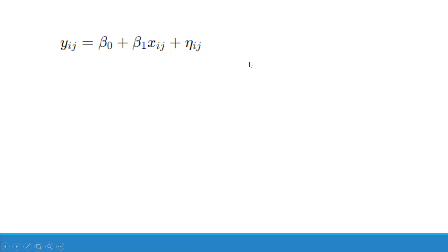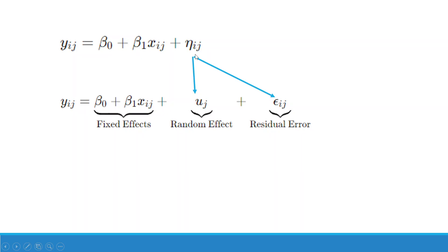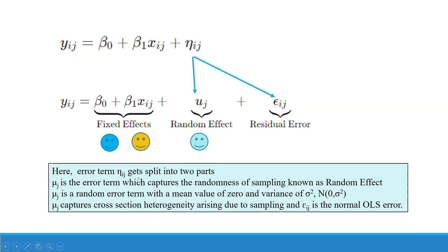This is the original OLS equation. The error term gets split into two parts — eta gets divided into mu and epsilon. The first part captures the fixed effects and the second part captures the random effects. Teaching method A and B represent the fixed effects. The error term eta_ij splits into mu_j, which captures the randomness of sampling, known as a random effect, and E_ij, which is the normal OLS error. Mu_j is a random error term with mean value of zero and variance sigma squared, capturing cross-section heterogeneity arising due to sampling from private and public schools.